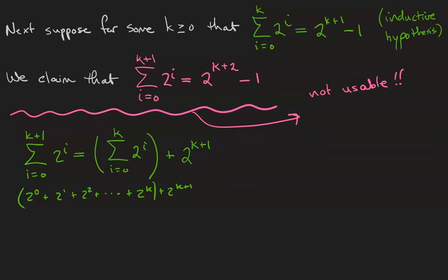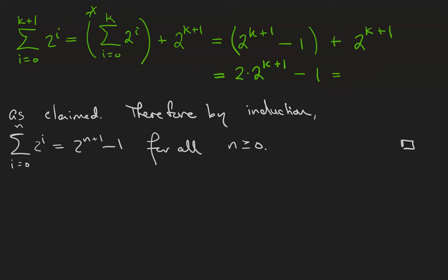I have assumed that it's equal to 2^(k+1) - 1. Don't forget my leftover 2^(k+1). Then I combine like terms and using the addition property of the exponent, it is equal to 2^(k+2) - 1 as claimed.